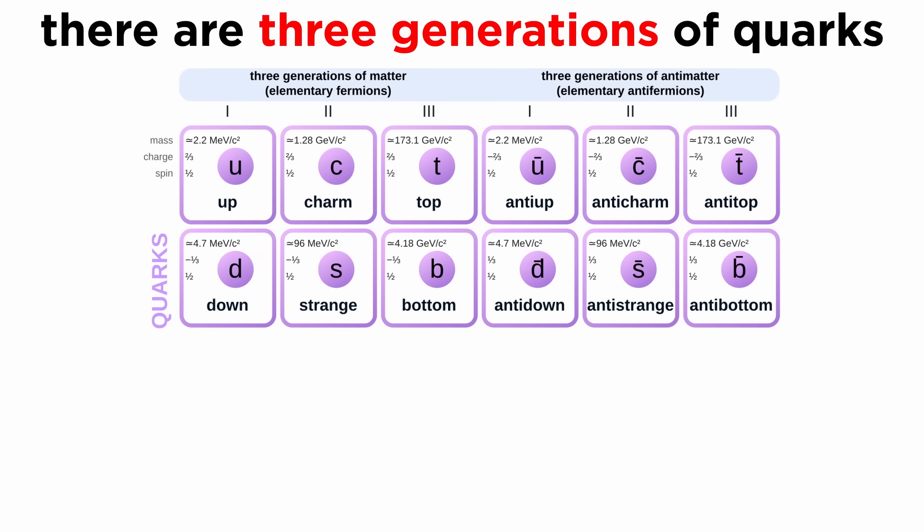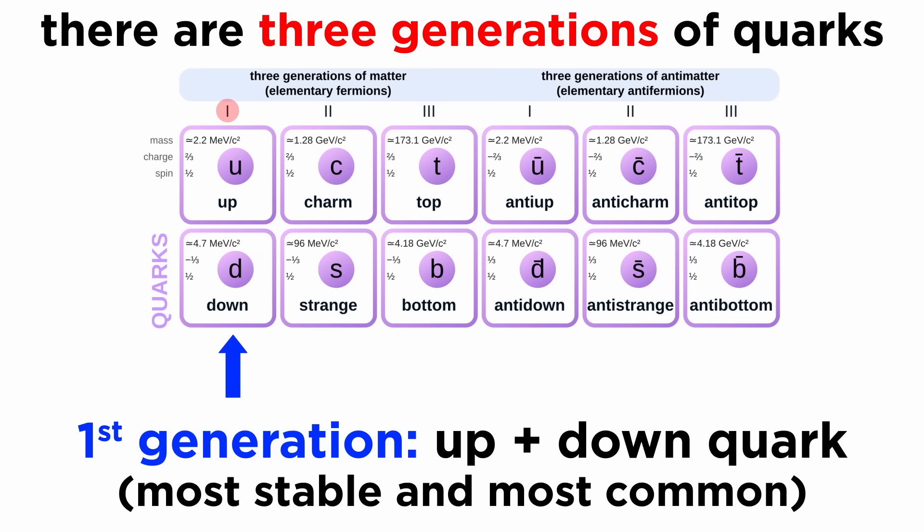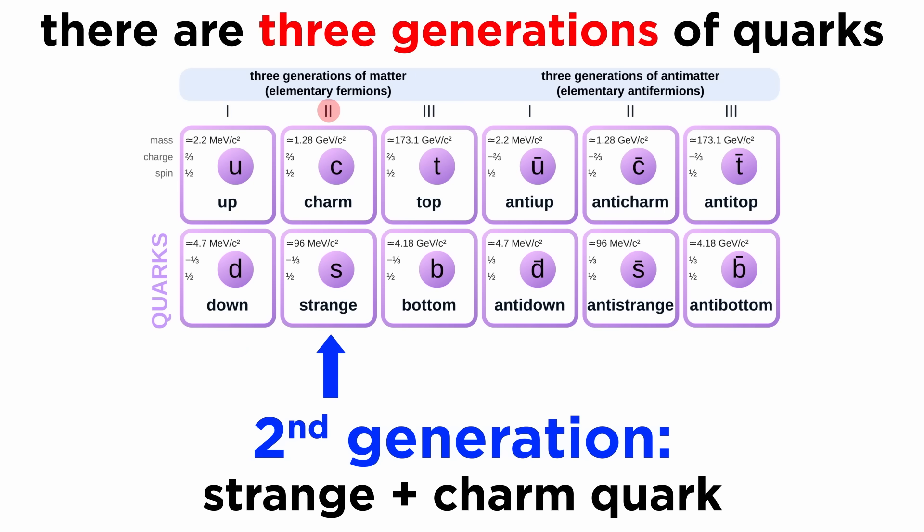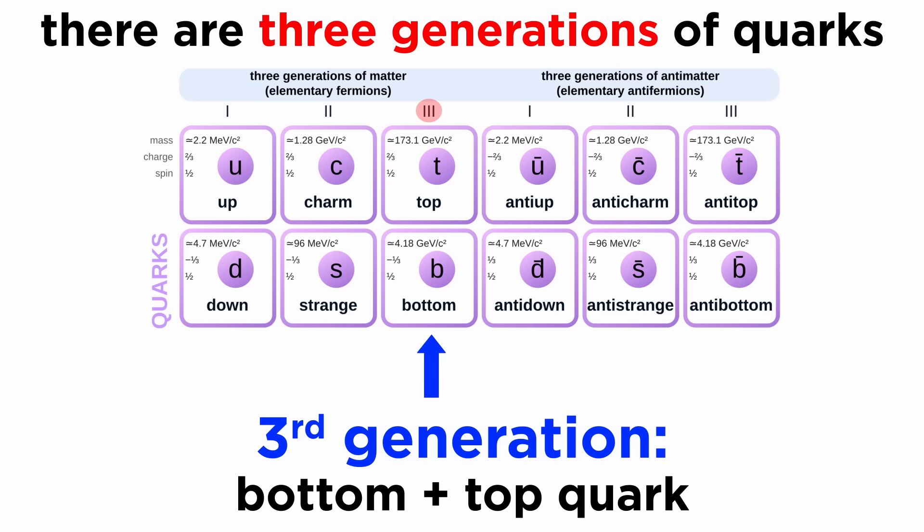There are three generations of quarks. The most stable quarks are in the first generation, those are the up and down quark. These are most of the quarks that we see in the universe today. The second generation contains the strange and charm quark, and the third generation contains the bottom and top quark.